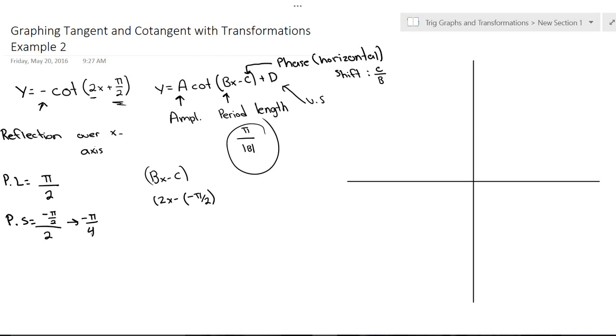That's our phase shift. Now we've got everything we need to know. Vertical shift is 0. Now let's figure out, let's look at what our standard cotangent would look like really quick.